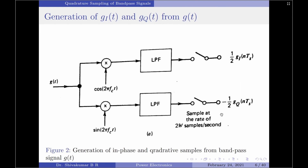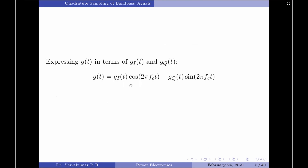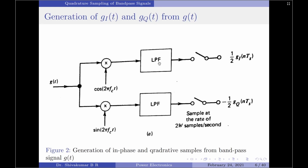Now let us discuss how to reconstruct the original band pass signal g(t) from the samples of g_i(t) and g_q(t). This is accomplished using the diagram shown in figure 3. To reconstruct the original band pass signal from its in-phase and quadrature phase samples, we first reconstruct g_i(t) and g_q(t) from their respective samples, and this is done by multiplying the outputs of the reconstruction filters by cos(2π·fc·t) and sin(2π·fc·t) respectively, then adding the results as per the earlier equation.